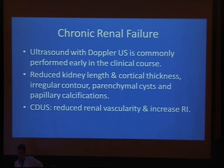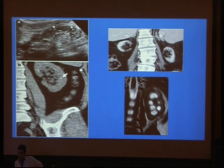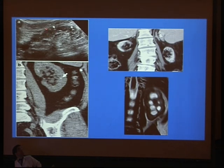On Doppler ultrasound, if there is reduced vascularity and increased resistance, it will be highly suggestive of chronic renal failure. This ultrasound shows increased echogenicity, irregular contour, and loss of corticomedullary differentiation with reduction of cortical thickness. This is also a case of papillary calcification — a case of chronic renal disease at ultrasound.